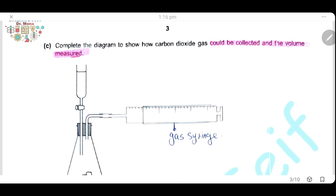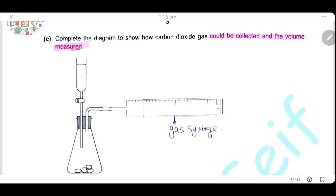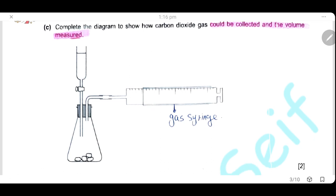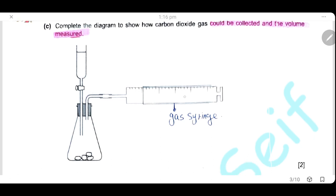Question C. Complete the diagram to show how carbon dioxide gas could be collected and the volume could be measured. The apparatus used to collect and measure the volume is gas syringe, so we will complete the diagram drawing a gas syringe showing a scale for the volume could be collected of carbon dioxide.